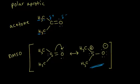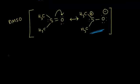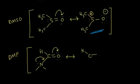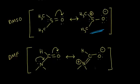Another example of a polar aprotic solvent is DMF — dimethyl formamide. Its structure has a carbonyl, a hydrogen, a nitrogen, and two methyl groups with a lone pair of electrons on nitrogen. Drawing the resonance structure for DMF: the lone pair on nitrogen kicks in to form a double bond, while the electrons on oxygen kick off. The oxygen gets a negative one formal charge, and nitrogen gets a positive one formal charge. So those are the resonance structures for DMF, another good polar aprotic solvent.